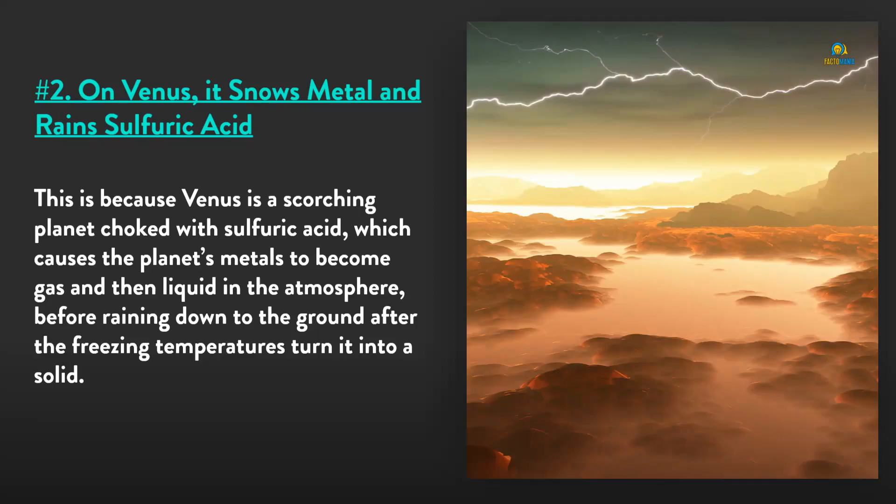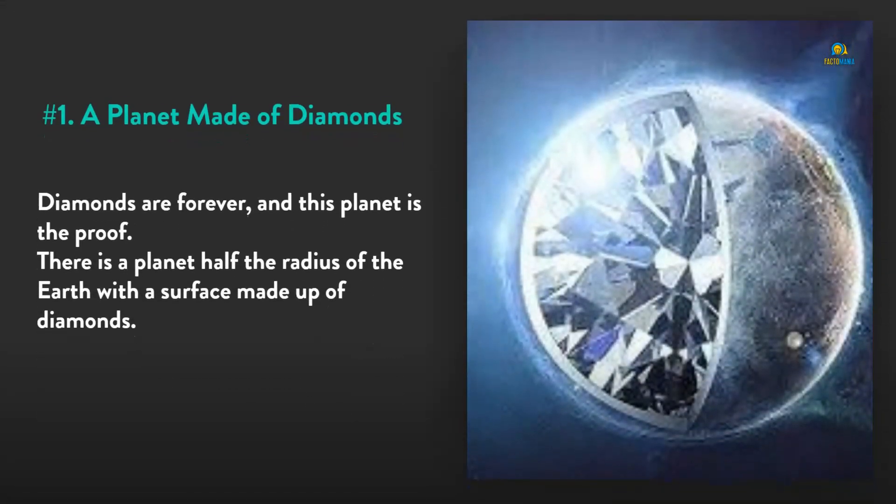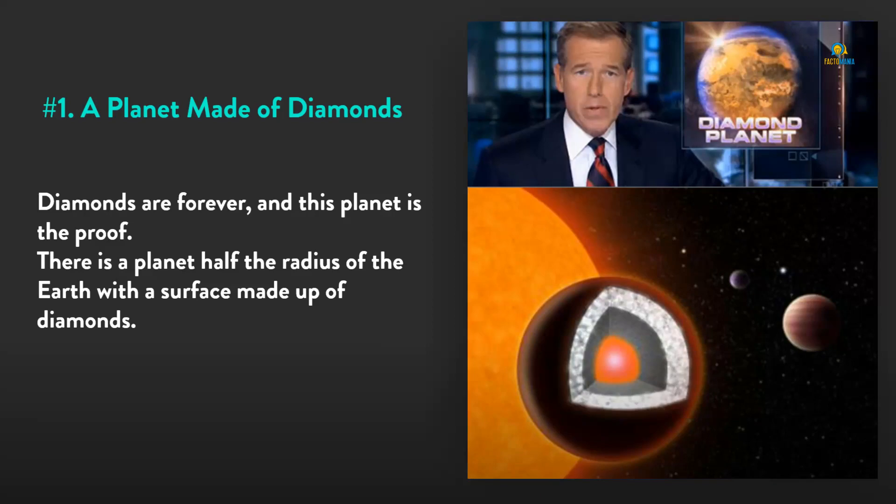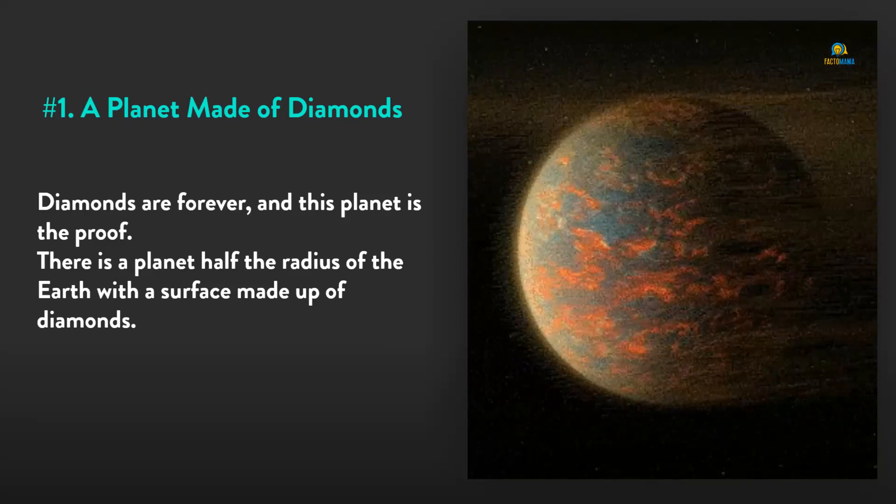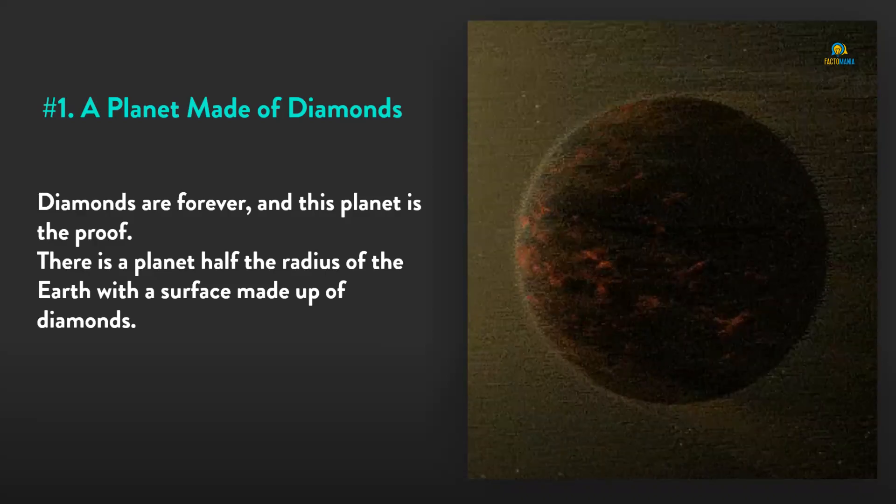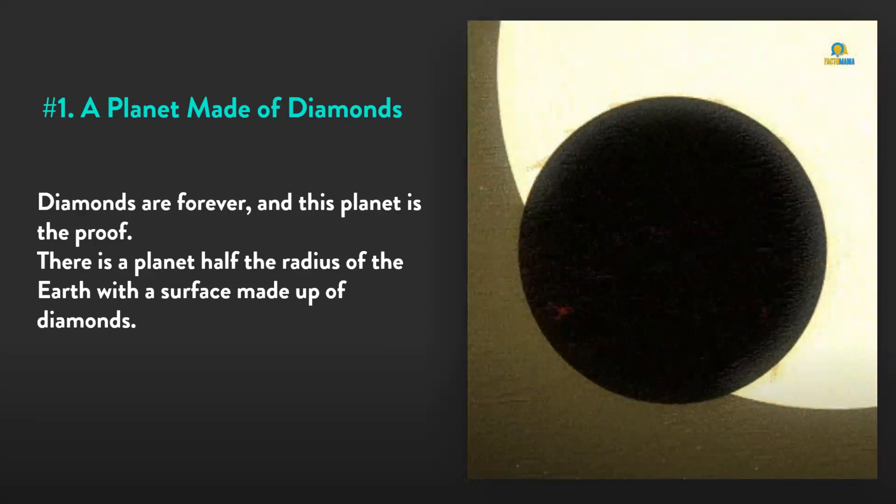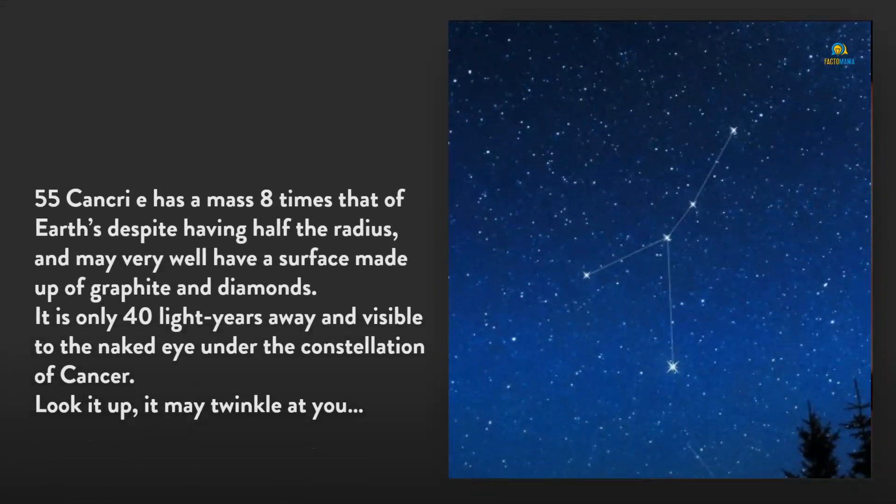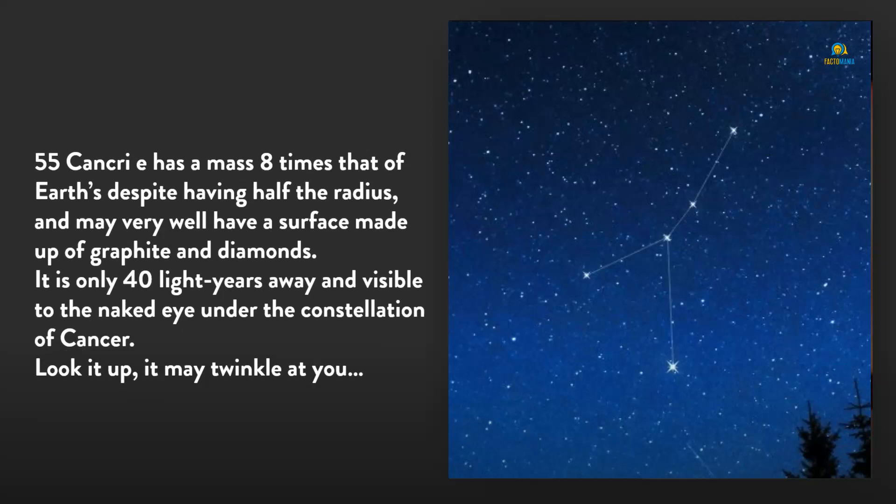Number 1: A planet made of diamonds. Diamonds are forever, and this planet is the proof. There is a planet half the radius of the Earth with a surface made up of diamonds. 55 Cancri e has a mass eight times that of Earth, despite having half the radius. It may very well have a surface made up of graphite and diamonds. It is only 40 light years away and is invisible to the naked eye, under the constellation of Cancer. Look it up—it may twinkle at you.